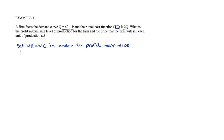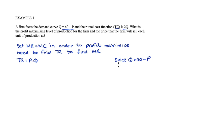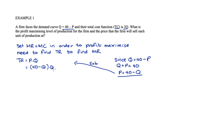To find marginal revenue, we take the derivative of total revenue with respect to quantity, so we need to find total revenue. Total revenue is price times quantity, but since we're taking the derivative with respect to quantity, we want total revenue just in terms of quantity. We substitute out the price variable using the demand curve: Q = 40 - P rearranges to P = 40 - Q. Substituting into TR gives TR = (40 - Q) × Q = 40Q - Q², and taking the derivative gives marginal revenue = 40 - 2Q.